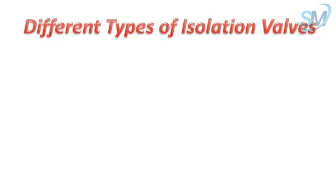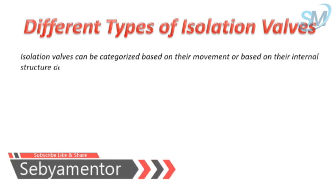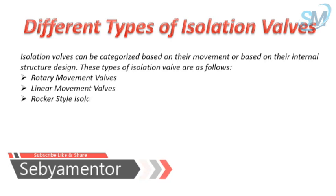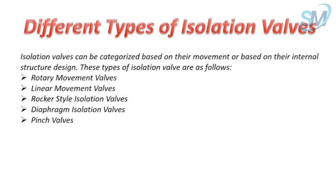Isolation valves can be categorized based on their movement or based on their internal structure design. These types of isolation valve are as follows: rotary movement valves, linear movement valves, rocker-style isolation valves, diaphragm isolation valves, and pinch valves.